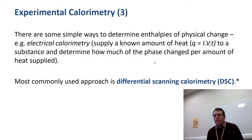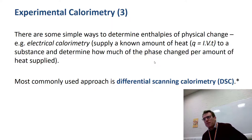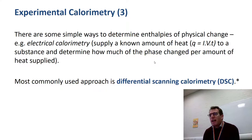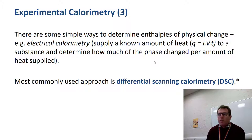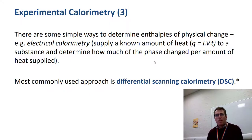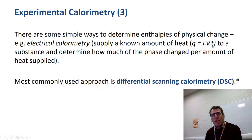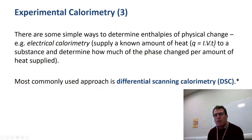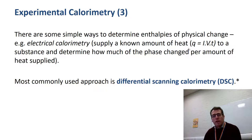We can use this concept to think about how we measure enthalpies of physical change. I want to cover differential scanning calorimetry, or DSC. But first, you may have come across electrical calorimetry at school — adding ice to a beaker of water, providing a known current at a known voltage for a known time, and measuring how long it took to melt a known mass of ice. From current times voltage times time we work out the heat required per gram of ice and convert to per mole, giving the enthalpy of fusion.